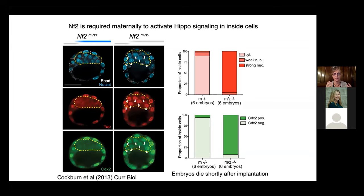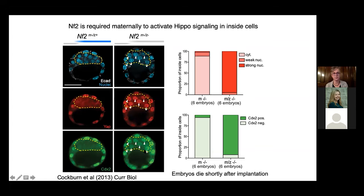From our lab, we looked at NF2 — the Merlin equivalent in mammalian cells, neurofibromatosis II — a component of the LATS kinase complex at the cell membrane. If you knock it out maternally and zygotically, as Katie Coburn showed, you make something that looks like a blastocyst, but that blastocyst is confused: in all the inside cells as well as the outside cells, YAP is in the nucleus. CDX2 also gets localized in the inside cells. By stopping YAP phosphorylation, you've basically turned all the cells into trophectoderm. This blastocyst will implant but can't go further.